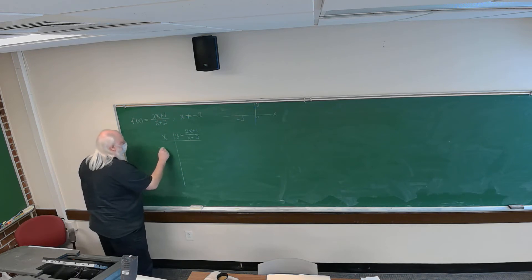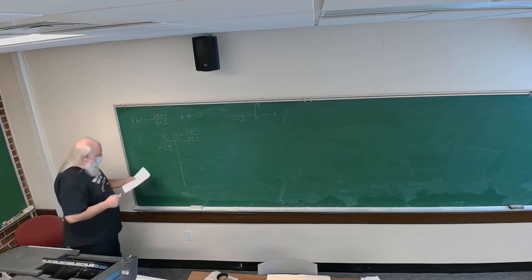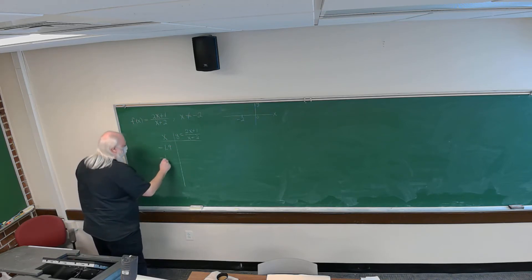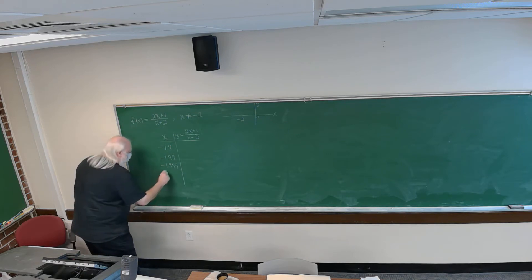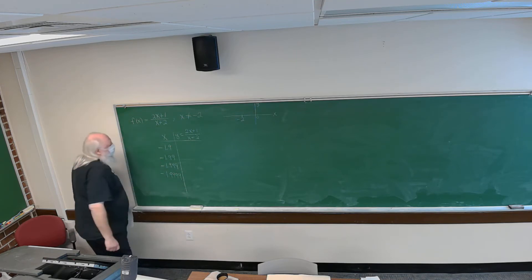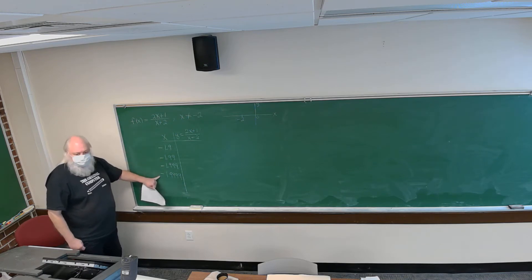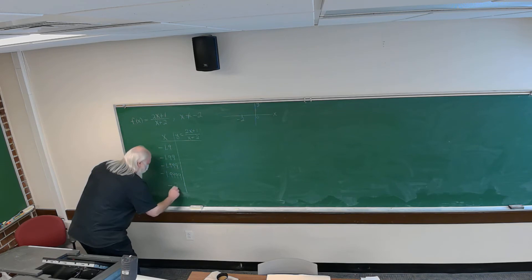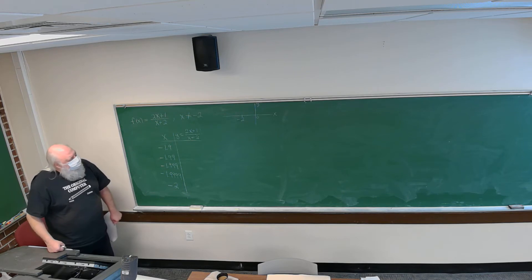My values of x start at minus 1.9, then minus 1.99, then minus 1.999, then minus 1.9999. As you go down the list, each succeeding value of x is getting closer to the number minus 2. We're interested in what the graph looks like to the right and to the left of x equals minus 2.